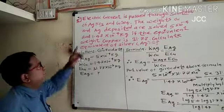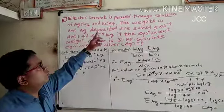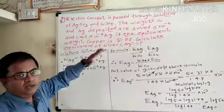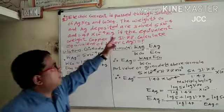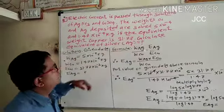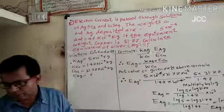Another problem: electric current is passed through solutions containing Co deposited. Same problem approach. The weight of Co deposited is 5.0 × 10^-5.